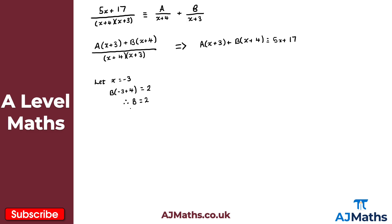We've found B, so now we need to find A by eliminating B. If I let x = -4, then B(-4 + 4) = B(0) = 0, so B disappears. I get A(-4 + 3) = -A, and on the right: 5(-4) + 17 = -20 + 17 = -3. So -A = -3, and therefore A equals 3.